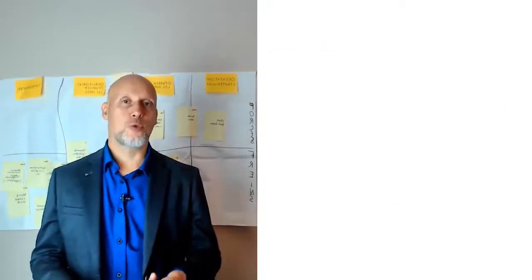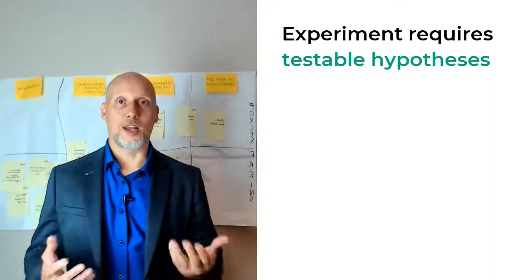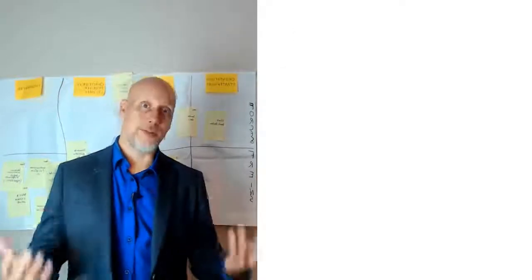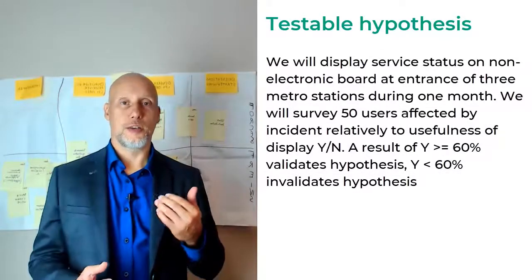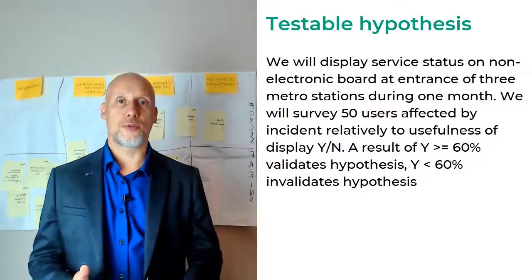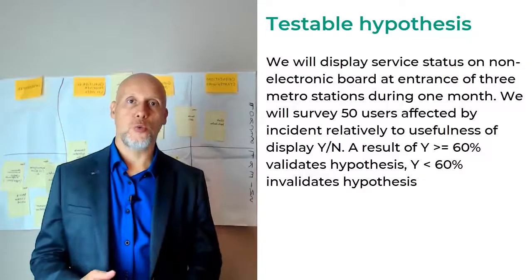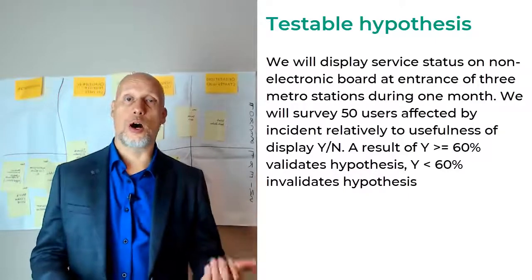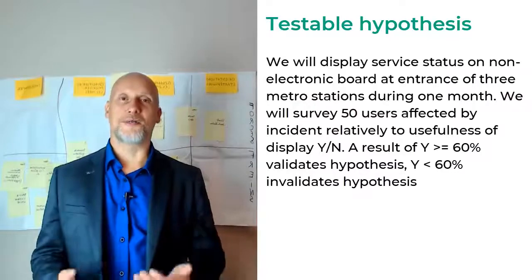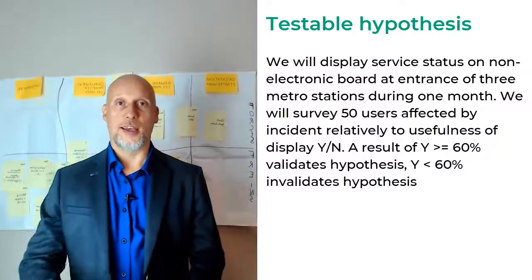An experiment is designed with typically one or more testable hypothesis, something we can test because the value hypothesis I showed you cannot be tested beforehand. The only way to test it is to implement everything. One testable hypothesis that we could experiment is this one: We're going to install a non-electronic board for service status for the metro in front of three metro stations during one month. And when there is an incident affecting these metro stations, we're going to survey at least 50 people with one question whether this display was useful or not to them. We consider this hypothesis validated if at least 60% of respondents answer yes and invalidated in all other cases.